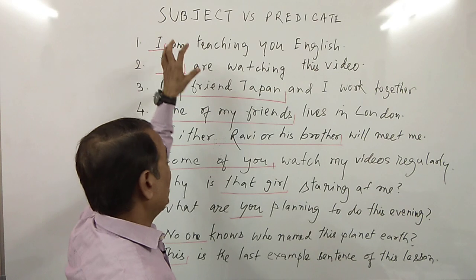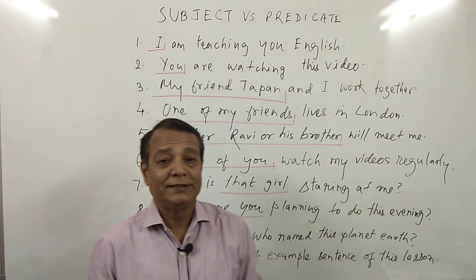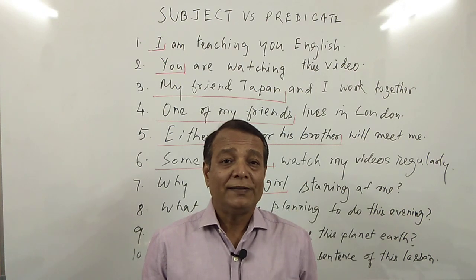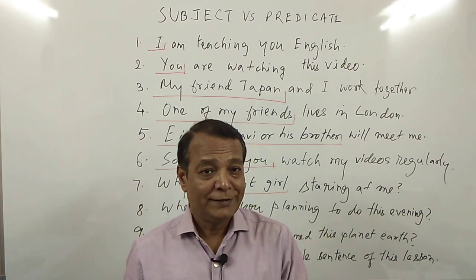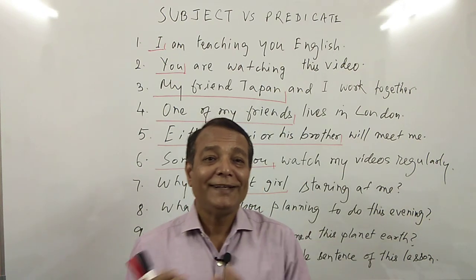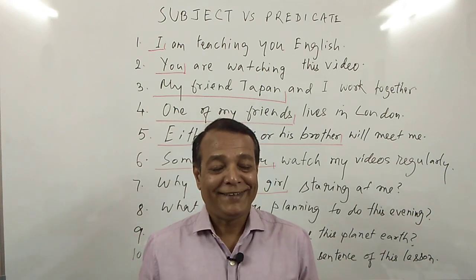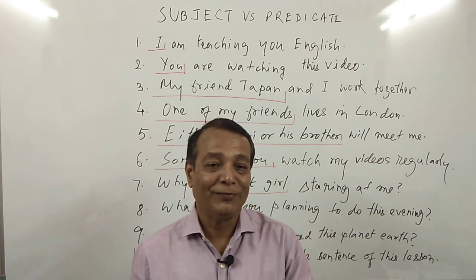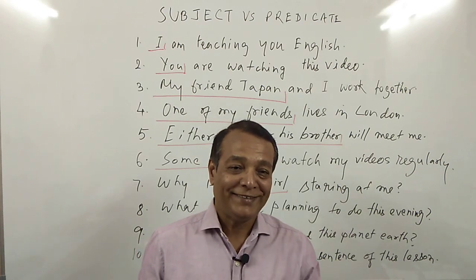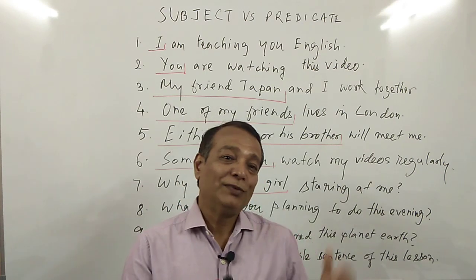In short, if I define subject, I would say: subject is that part of a sentence about which we talk. And predicate is what we say about the subject. We say something about someone and that becomes the predicate. Subject is someone or something about which we talk.